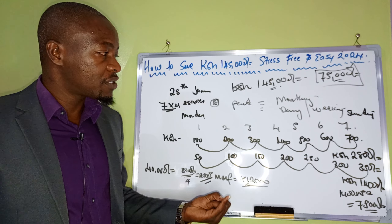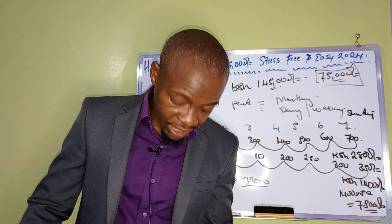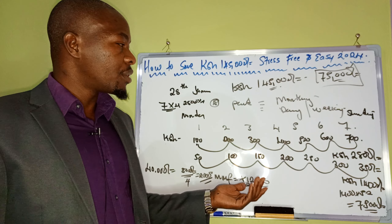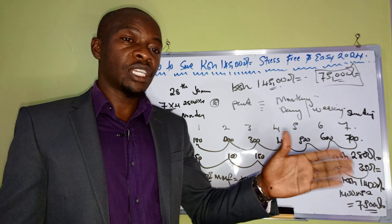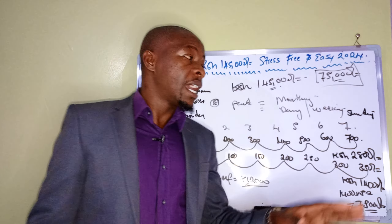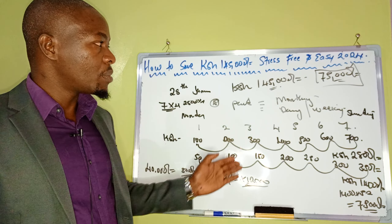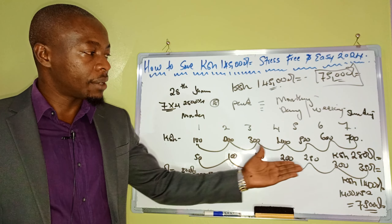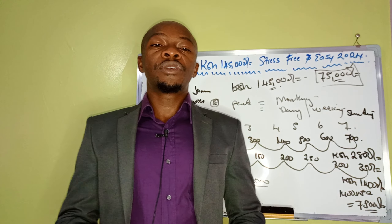The first formula I shared was saving a shilling per corresponding day — day two you save two shillings, day three you save three shillings — which sums to around 66,800 shillings. I also shared a formula on how to save a 100,000 challenge. This current formula is another approach for those who earn daily, weekly, or monthly.